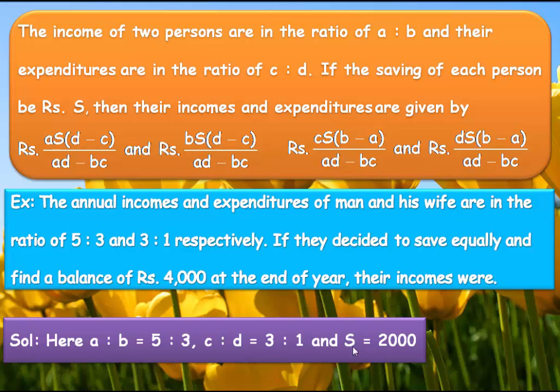Here S equals half of the amount 4,000, which gives each person's saving. Now we have to find only the incomes. Using these two relations we get the incomes. If you want to find the expenditures, we would use the other two relations.